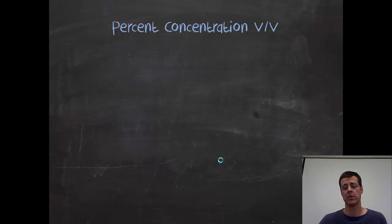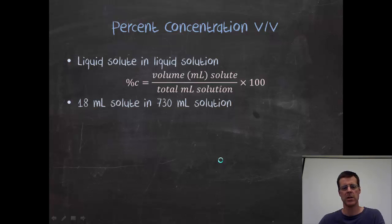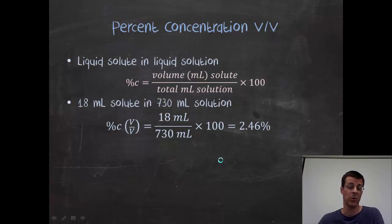Moving on, we can do a percent concentration where we're talking about two volumes. If our solute is a liquid, then it's more convenient to measure volume. So I'd do the same thing. I would take the volume in milliliters and divide it by the total of milliliters. So 18 milliliters and 730 milliliters would be 2.46%. Yes, you can round it off a little bit. I just kept them a little bit longer here.